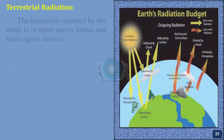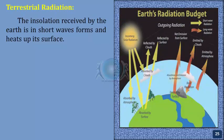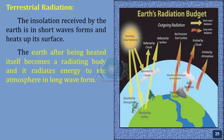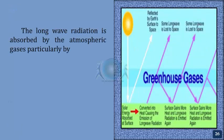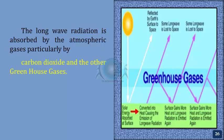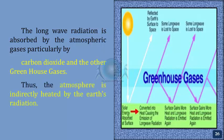Terrestrial radiation. The insolation received by the Earth is in short wave form and heats up its surface. The Earth, after being heated, itself becomes a radiating body and radiates energy to the atmosphere in long wave form, heating up the atmosphere from below. This process is known as terrestrial radiation. The long wave radiation is absorbed by atmospheric gases, particularly by carbon dioxide and other greenhouse gases. Thus, the atmosphere is indirectly heated by the Earth's radiation.